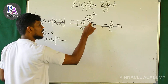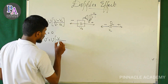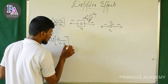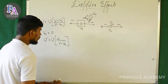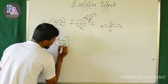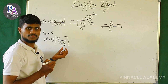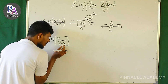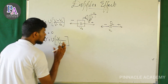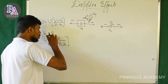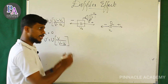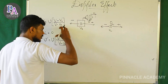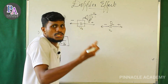If the source is moving toward the listener, Vs is positive, so V minus Vs in the denominator becomes smaller. If the denominator decreases, the frequency increases. So when the source moves toward the listener, the apparent frequency is higher than the original frequency.